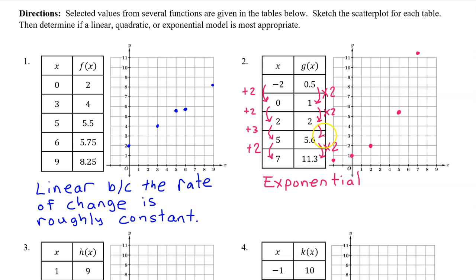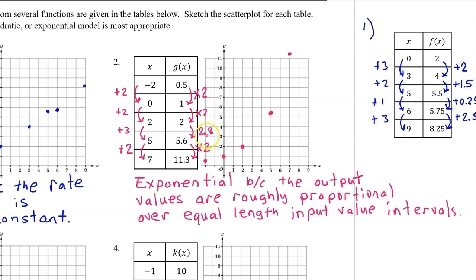This is going to be a little bit more than doubling, maybe it's like 2.5 or something, but that goes along with the fact that this is a little bit more than the normal equal length input value. That one was 2.8. We can say that g of x is exponential because the output values are roughly proportional over equal length input value intervals.